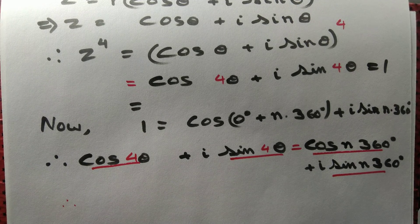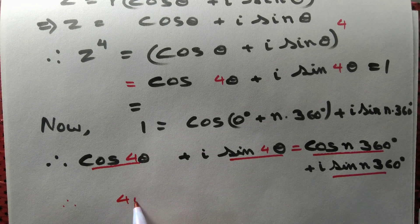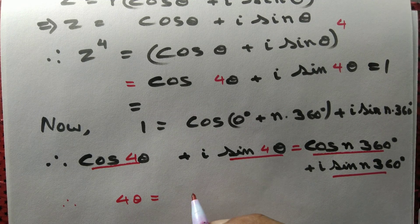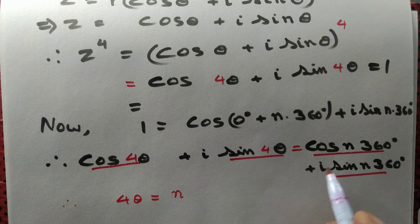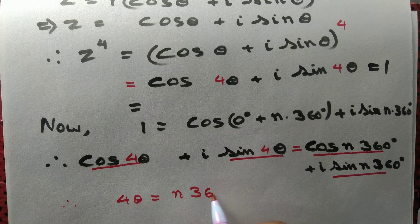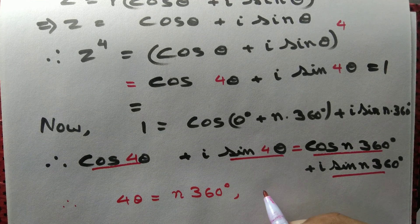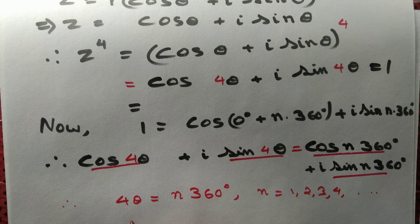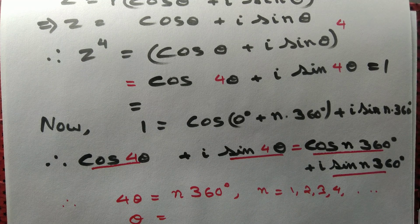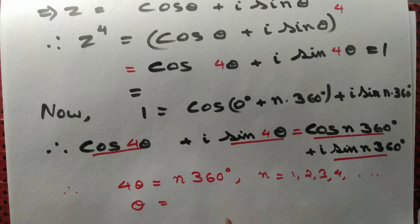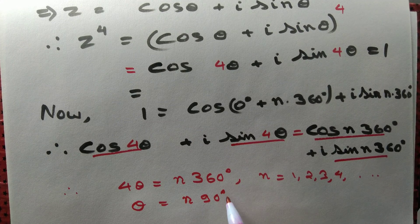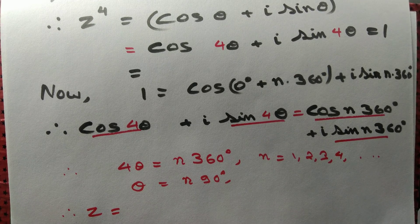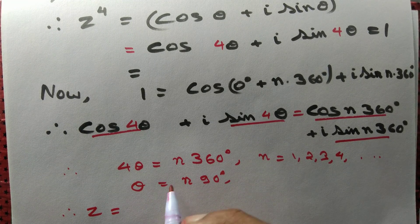Comparing angles for n equal to 1, 2, 3, 4 and so on, we get 4θ = n × 360°. Cancelling 4, we get θ equal to n × 90°. Therefore z equals cosθ + i sinθ, with r equal to 1.